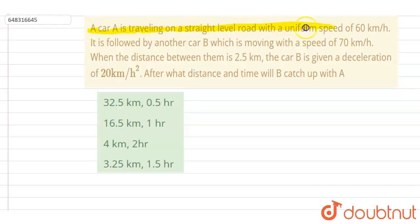A car A is traveling on a straight level road with a uniform speed of 60 km per hour. It is followed by another car B which is moving with a speed of 70 km per hour. When the distance between them is 2.5 kilometers, B is given a deceleration of 20 kilometer per hour squared. After what distance and time will B catch up with A?